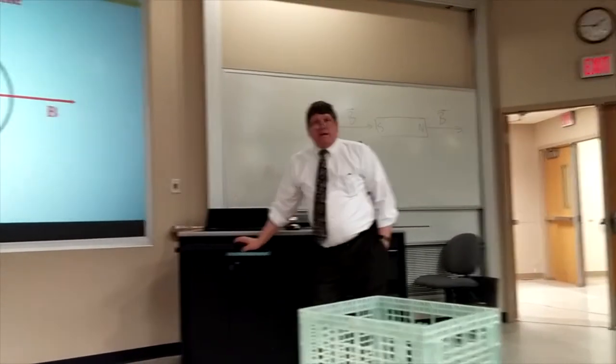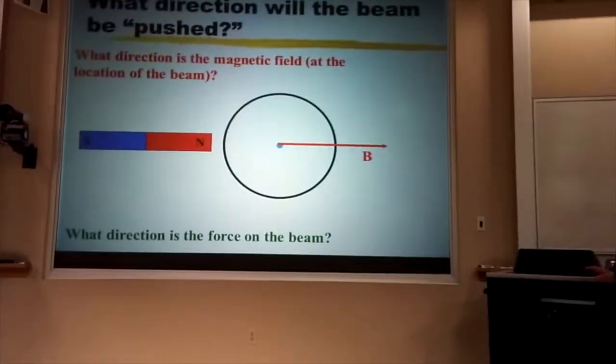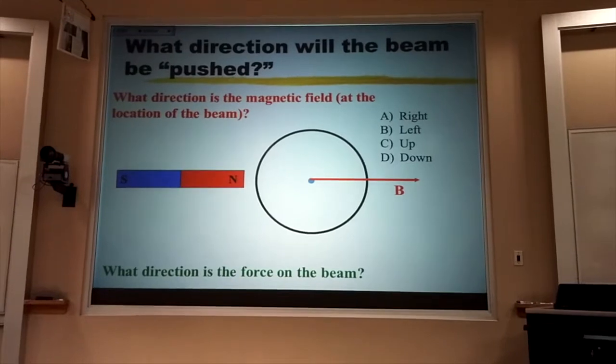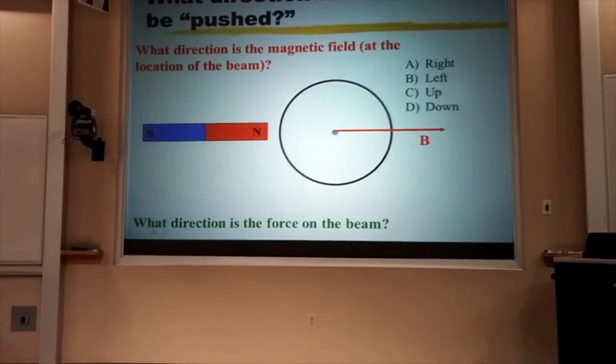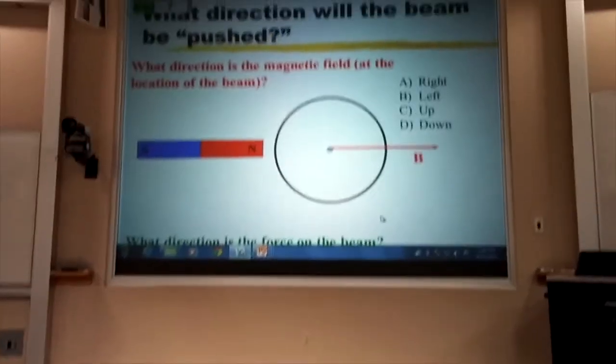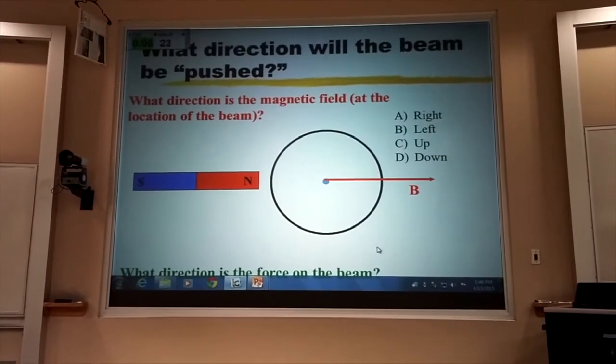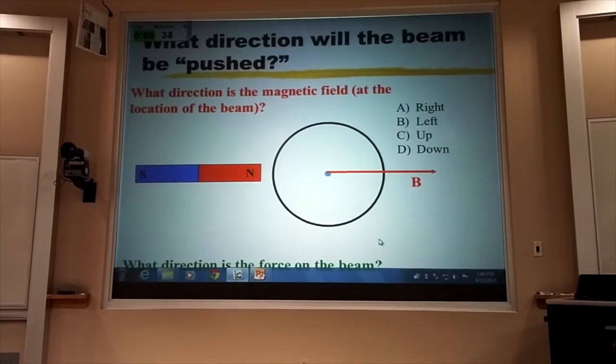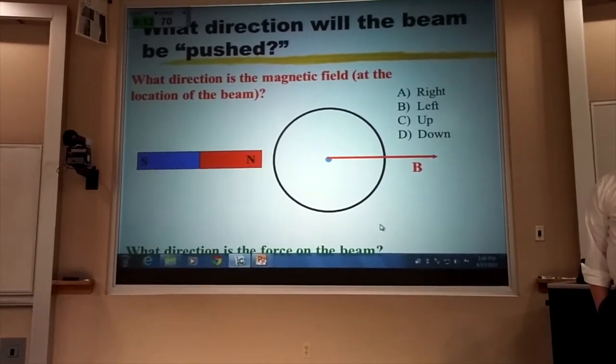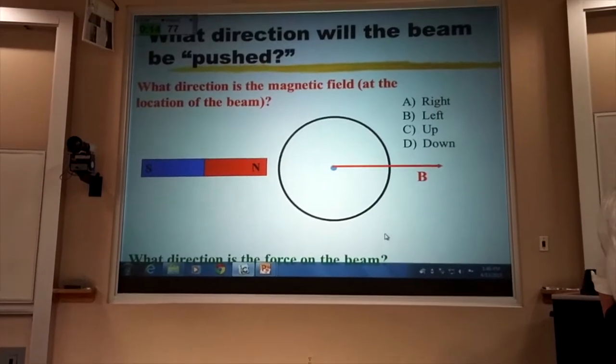So if those are negative electrons, which way are they going to be pushed by the magnetic field? Is it going to be right, left, up, or down with your clicker? Right, left, up, or down.